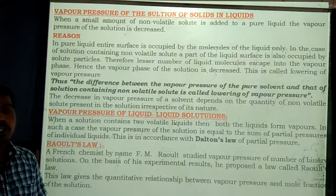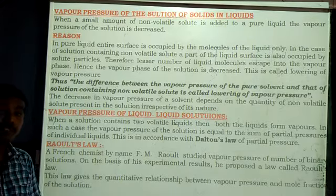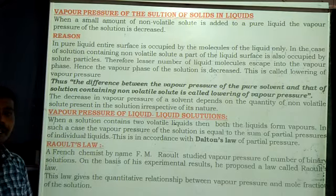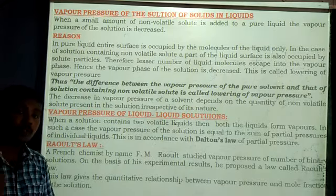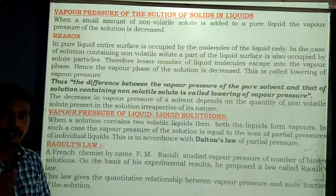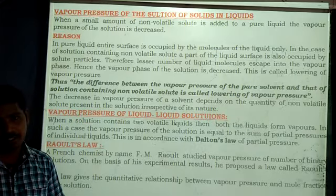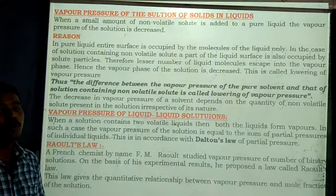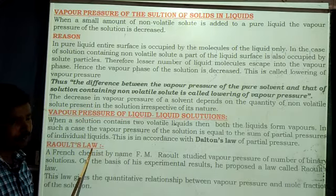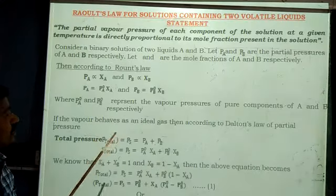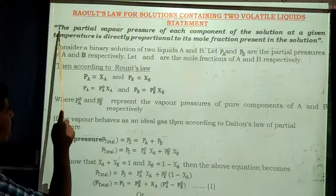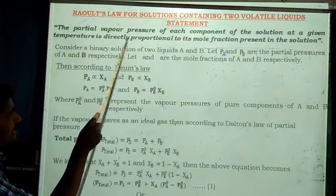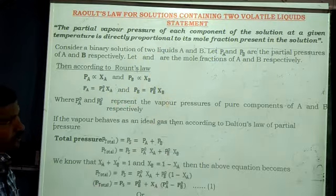Raoult's Law is a law to study the vapor pressure of different binary solutions — what happens to the vapor pressure of the solution if you are going to add a non-volatile solute in a volatile solvent, and if you are going to add both volatile liquids in a solution. Let us go through its statement. The partial vapor pressure of each component of the solution, at a given temperature, is directly proportional to its mole fraction present in the solution.